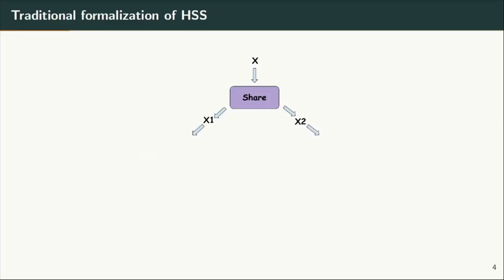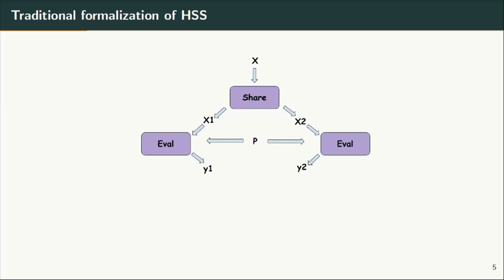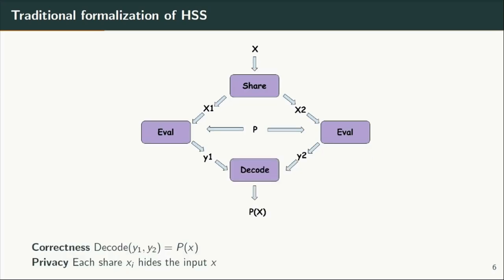The traditional definition of HSS consists of three algorithms: share, eval, and decode. The share function is used to secret share the input x with the two evaluating parties. The evaluating parties run the eval algorithm, which takes as input a share of x and the program description p. The output of eval can be fed into the decode function, which outputs p of x — the evaluation of the program p on the original input x. Security of HSS requires correctness and privacy. Correctness ensures the decode output is correct, while privacy requires that each share of x should hide x. HSS can also be seen as the two-party relaxed variant of FHE, or fully homomorphic encryption, where servers can homomorphically compute on the secret input x under the additional constraint that the servers are non-colluding.